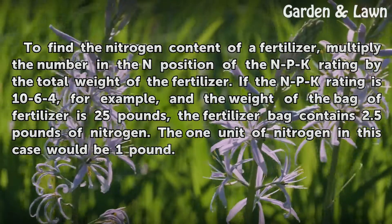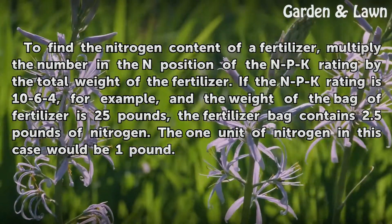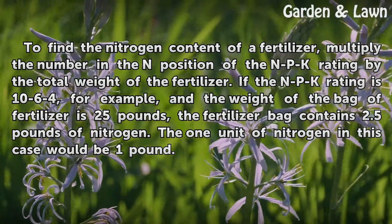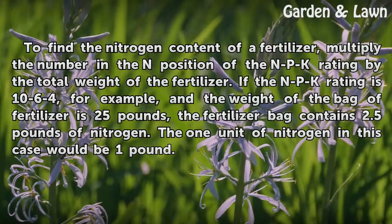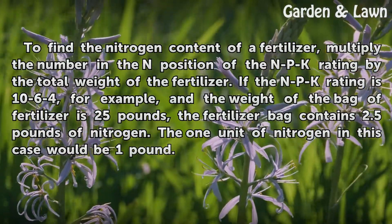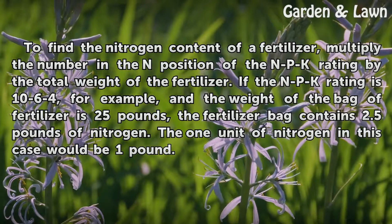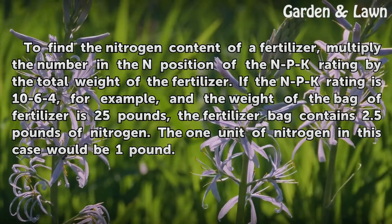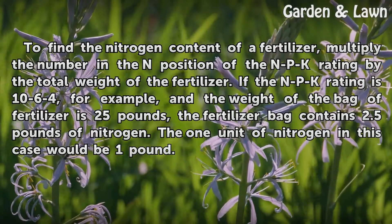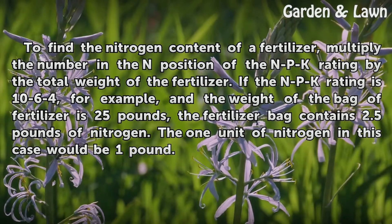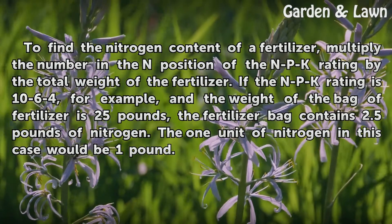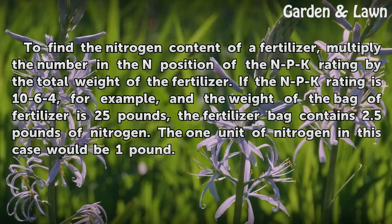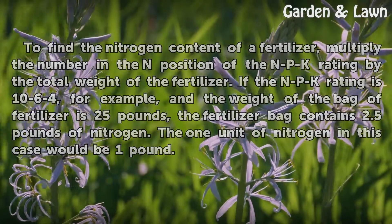If the NPK rating is 10-6-4, for example, and the weight of the bag of fertilizer is 25 pounds, the fertilizer bag contains 2.5 pounds of nitrogen. The one unit of nitrogen in this case would be 1 pound.